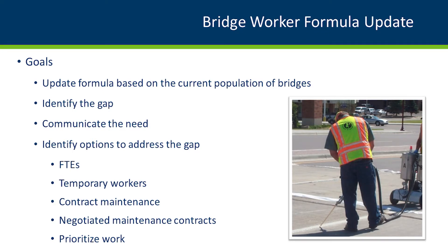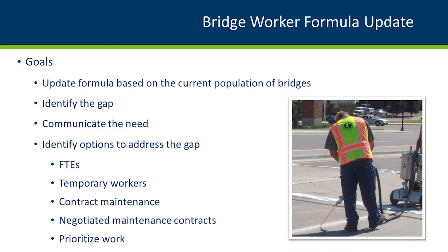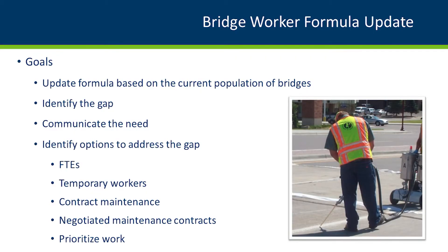The goal was to update the formula based on the current population of bridges. Once those hours are calculated, it will identify the gap between what the formula calculates and what our crew forces are — the idea is basically to communicate that need. We may not be able to fill that need with full-time employees, but we could look at other options: temporary summer laborers, contract maintenance such as negotiated maintenance contracts, or prioritizing work focusing on bridges that provide the most benefit or are easier to access.